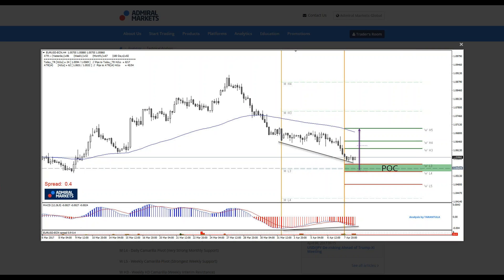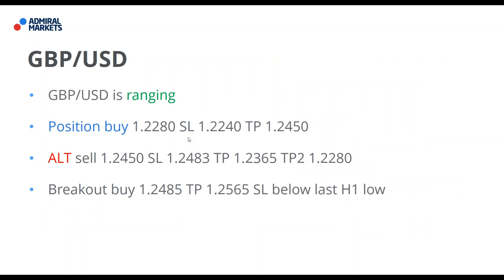I will be looking to sell GBPUSD around 1.2450-1.2483, stop-loss, with a little bit of spread. TP1 at 1.2365, TP2 at 1.2280. Position buy: I want to go long at 1.2280. I'm not sure that it will happen, maybe it will, maybe it will not. But 1.2280 is a level where we could go long simply because there is a lot of confluence there, and we can also see a lot of historical buyers.